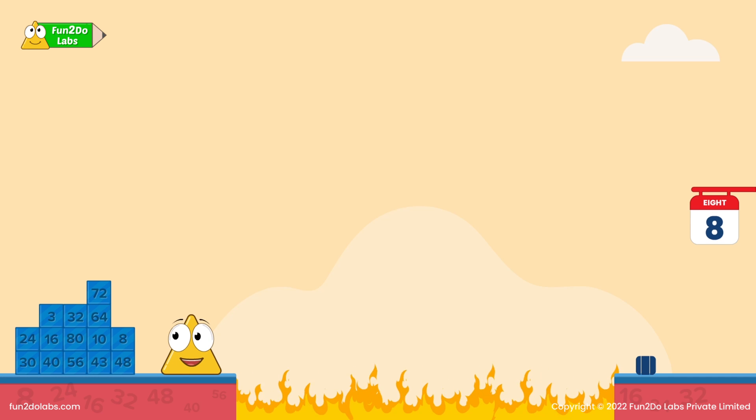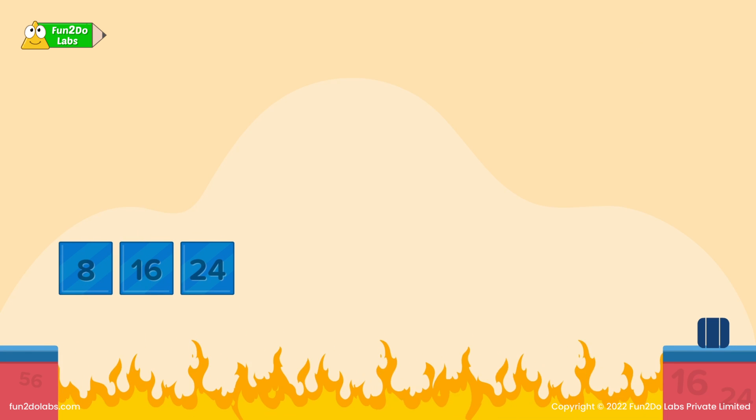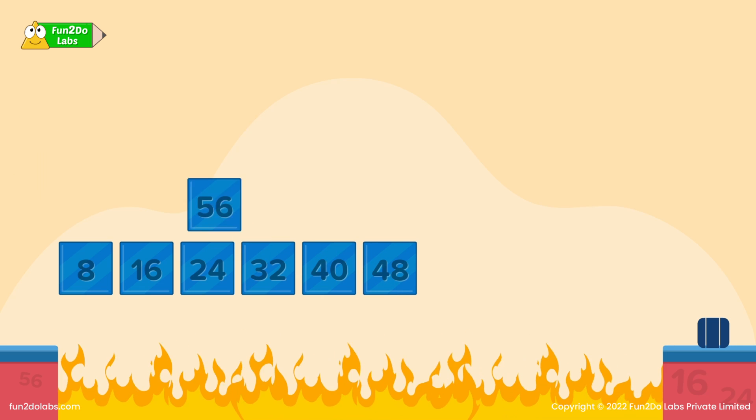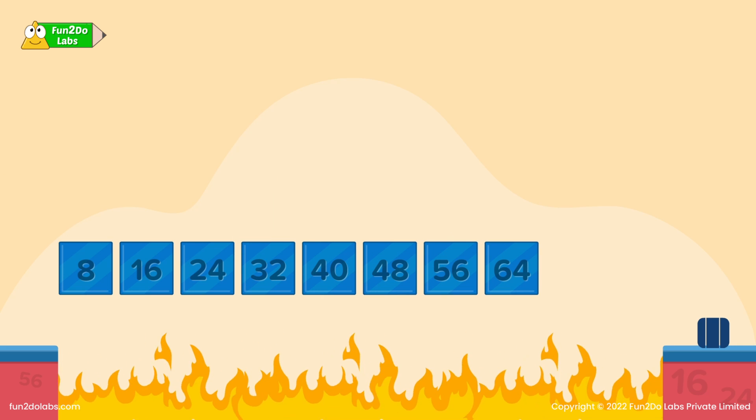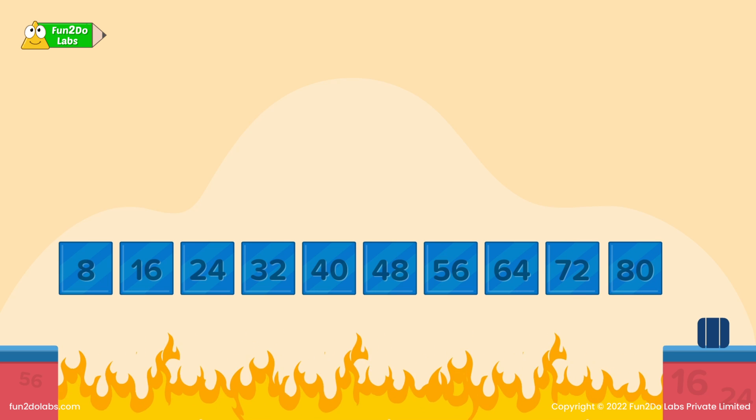Suddenly, he spots square blocks with numbers. He picks the block with the number 8 to throw it. As he throws, the stone settles back in the air like a brick from the bridge. 8, 16, 24, 32, 40, 48, 56, 64, 72, 80 are multiples of 8.